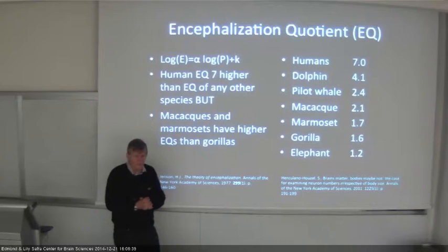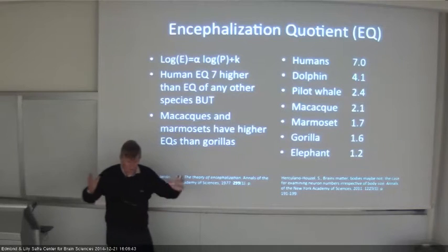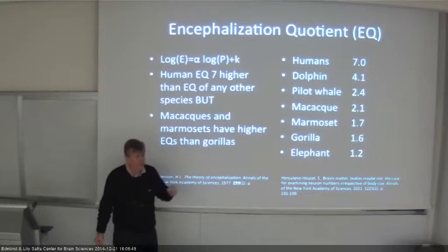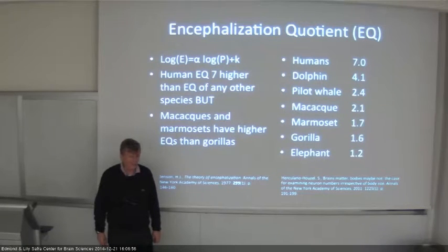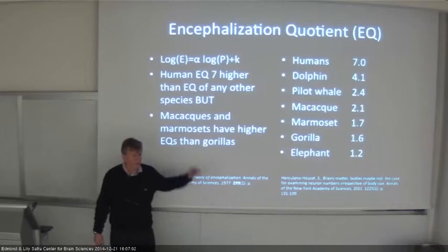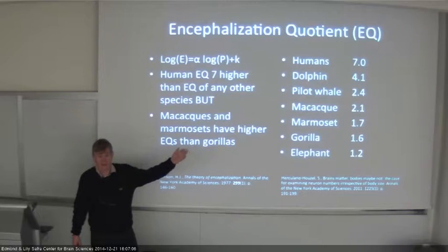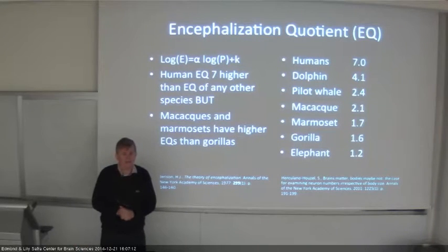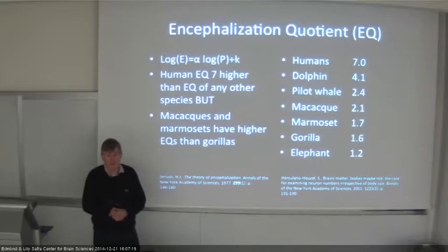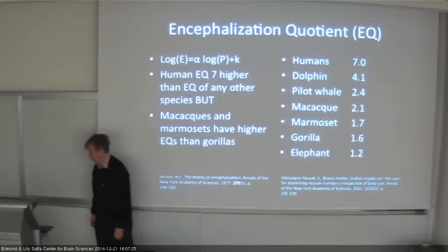Think of the brain as a computer. The encephalization quotient essentially asks: do I have more transistors than expected for the case? That might tell you when the computer was built, but very few computer scientists would take those measurements as meaningful for computing power. It's more or less coincidental. So this measurement doesn't work very well either.